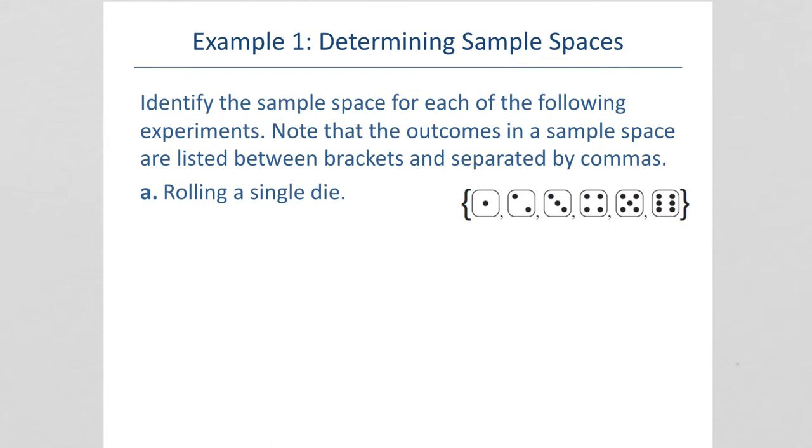Example 1 says, identify the sample space for each of the following experiments. Notice that the outcomes in a sample space are listed between brackets and separated by commas.